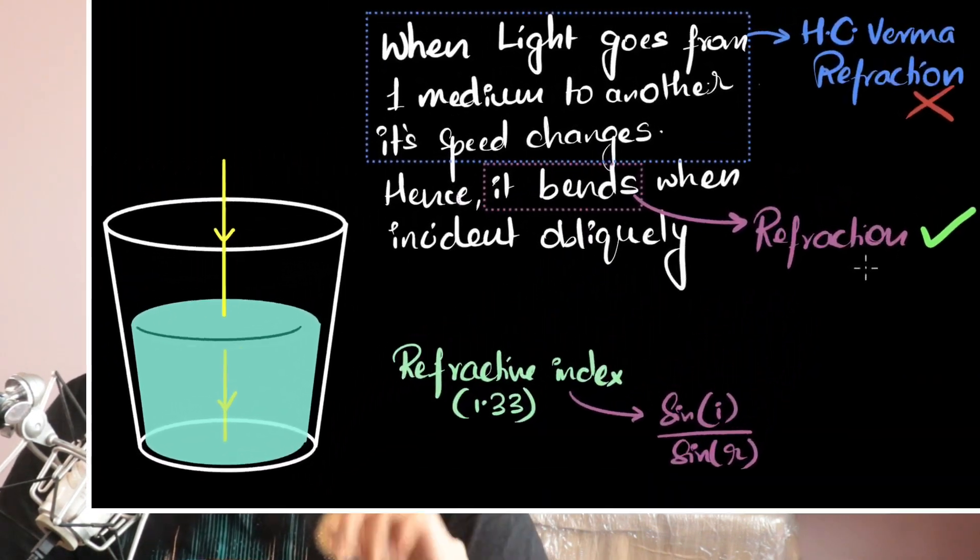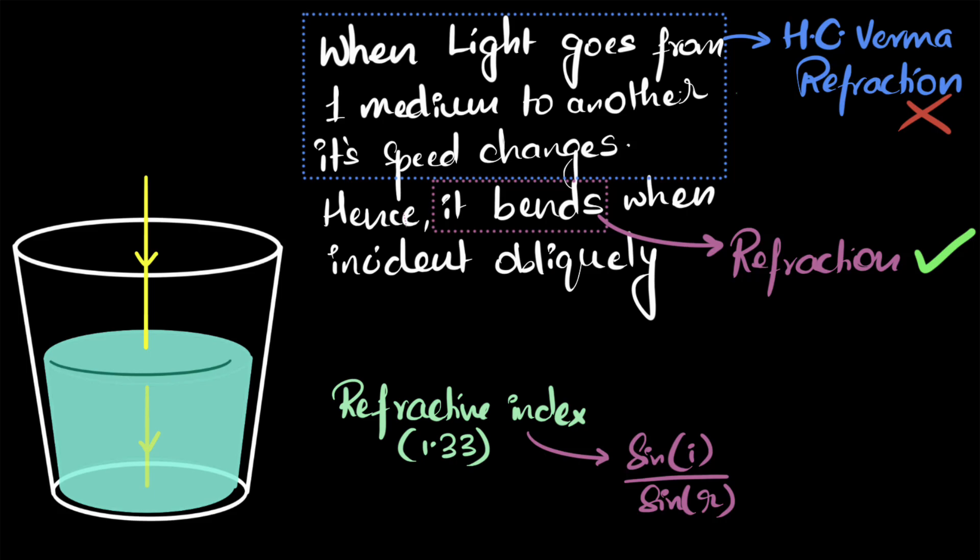But we know from Huygens principle that refractive index can also be thought of as the ratio of the speed of light, isn't it? So I could also say that 1.33, it's telling me that the speed of light in water is 1.33 times less compared to speed of light in vacuum. That's another way to think about it.